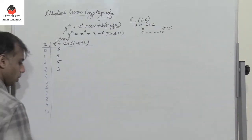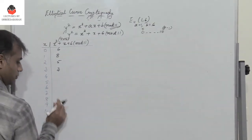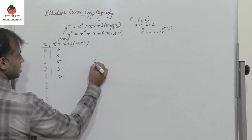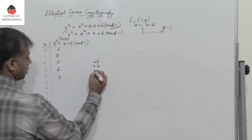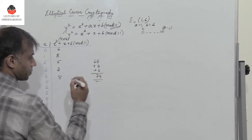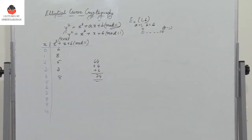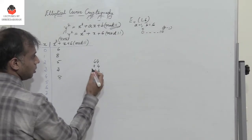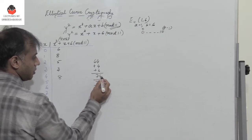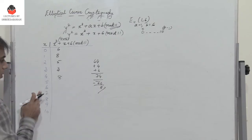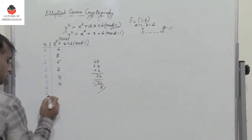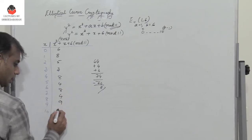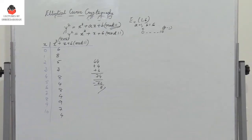For x=4: 4 cubed plus 4 plus 6 gives 74. Since 66 is a multiple of 11, 74 minus 66 gives 8. Similarly, for x=5 I get 4; for x=6, 8; for x=7, 4; for x=8, 9; for x=9, 7; and for x=10, 4. These are the RHS values.